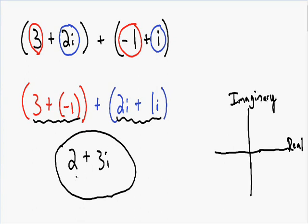Let's go back and take a look at our complex number 2 plus 3i. We have a real number of positive 2, which means we need to go 2 units to the right in the real direction. And we have an imaginary number of 3i, which means we need to go 3 units up in the imaginary direction. So if we go over 2 to the right and 3 up, the point should be somewhere around here. And now we have plotted our point of the complex number.